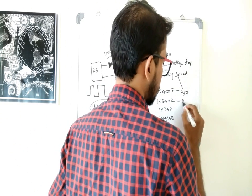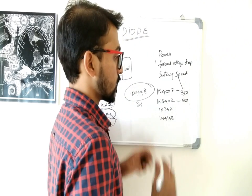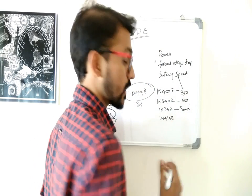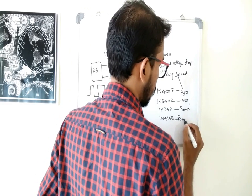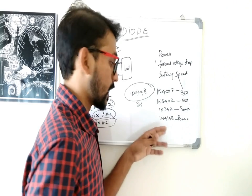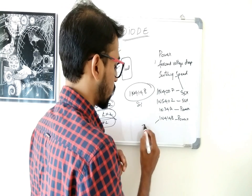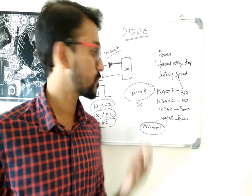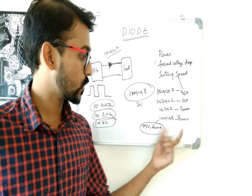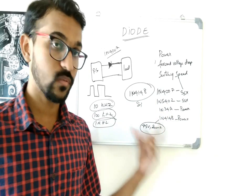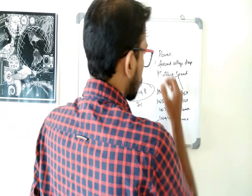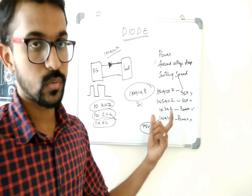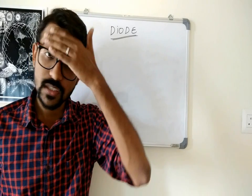Similarly, the 1N5402 cannot handle switching speed — it has a reasonable switching speed but still the problem is power, it cannot take enough power. The 1N4148 is a high-speed switching diode but the power it can handle is very less — I think it can handle a voltage of 75 volts at about 200 milliamps, which is quite less for a power diode. It can only be used in applications where very low current and low voltage are needed. Similarly for forward voltage drop, all these fail except for the germanium diode which has very low forward voltage.